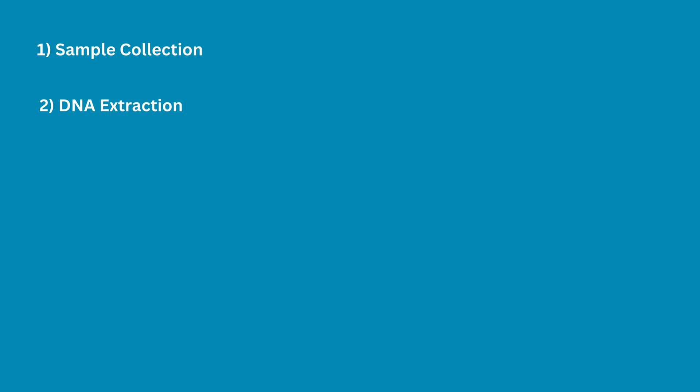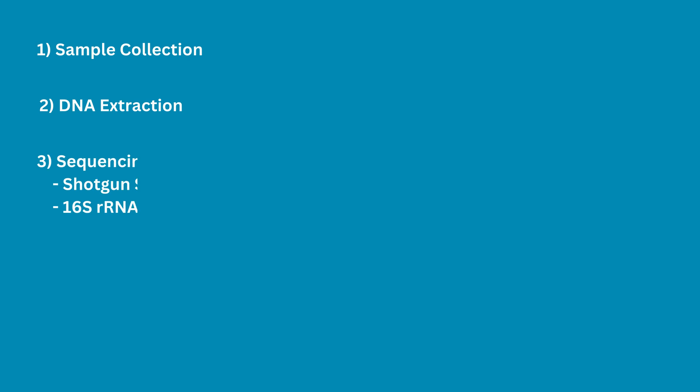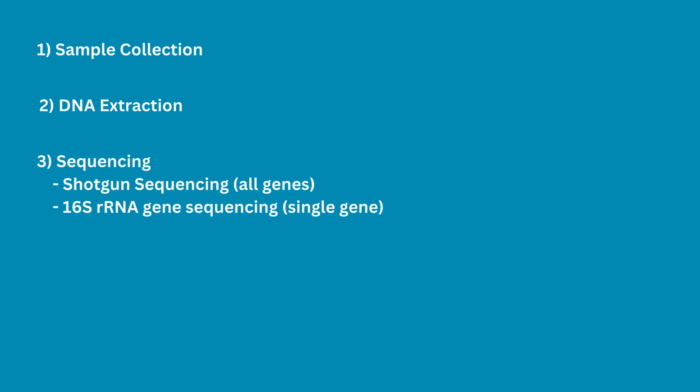Next, we extract DNA from those samples, giving us a mix of genetic material from all the different organisms present. Then we sequence this DNA using cutting-edge technology. There are two main types of sequencing used in metagenomics. We have shotgun sequencing, which gives us a comprehensive view of all the genes in all the organisms present — it's like having a wide-angle snapshot of the entire microbial community.